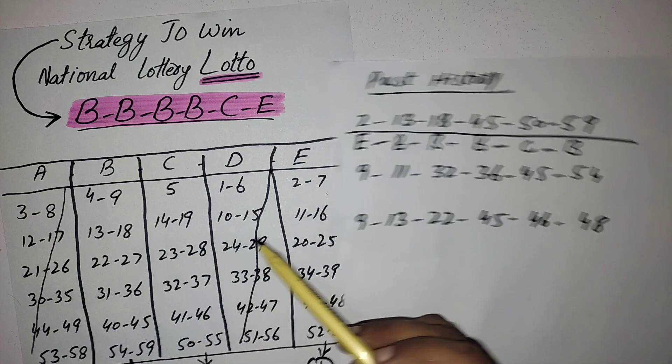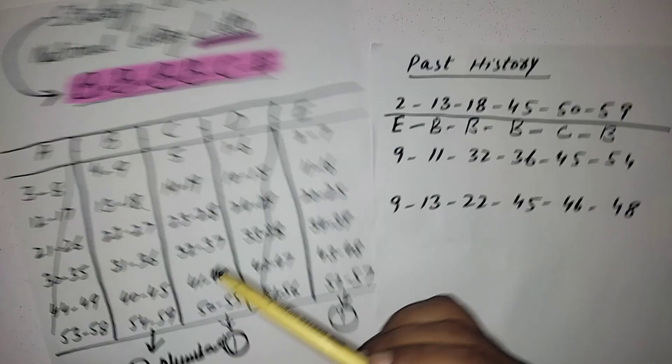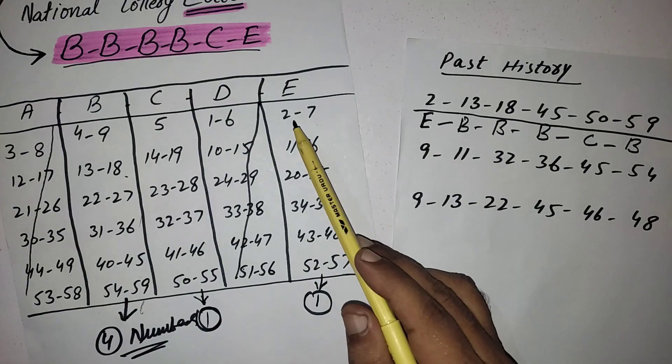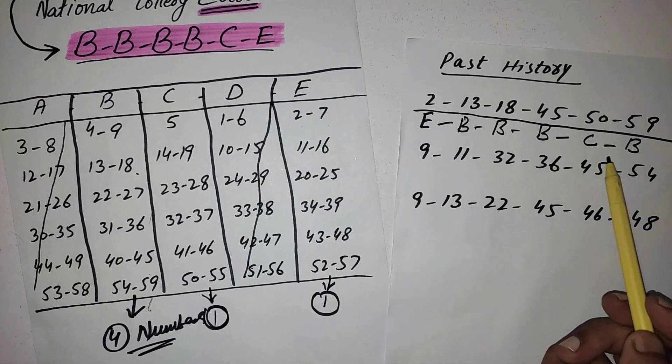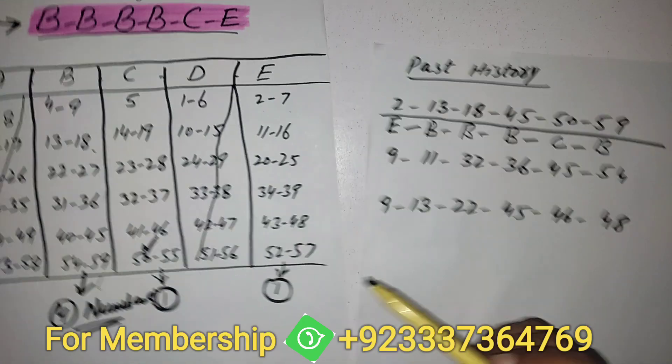You can see four numbers from B category they pick: 13, 18, 45, and 59, and two numbers from E category, and from C category is 50. Like this.